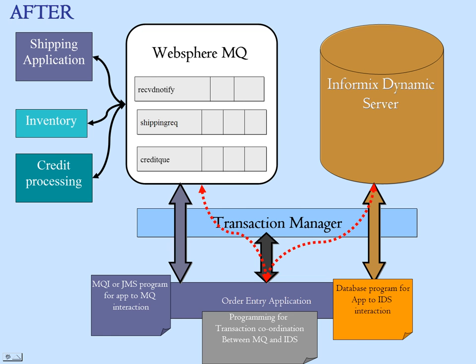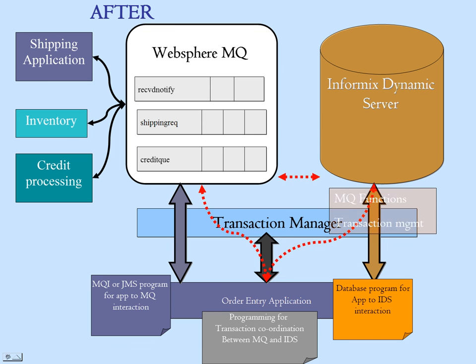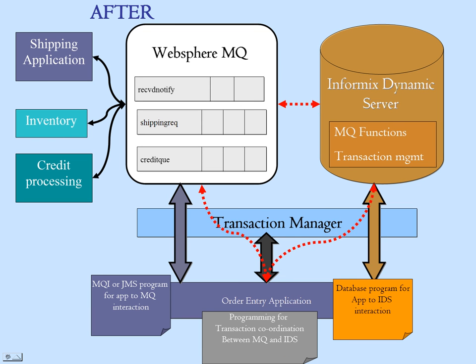Let's look at what happens when we provide certain functionality built into Informix Dynamics Server. Informix Server 10 and 11 have built-in MQ support. It has a set of MQ functions that you can use to retrieve messages from MQ to Informix directly and to send data from Informix to MQ directly. In addition, Informix also manages the transaction — that means the two-phase commit for all the interactions between IDS and WebSphere MQ.